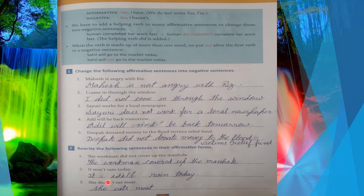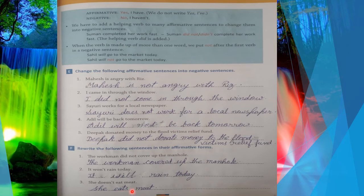Second: 'It won't rain today.' The positive way is: 'It will rain today.' 'Won't' is the negative form — 'will' is the positive. Next: 'C doesn't eat meat.' 'Doesn't' means simple present, so the affirmative is: 'C eats meat.'